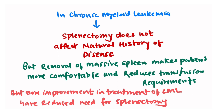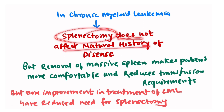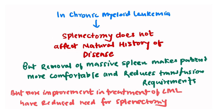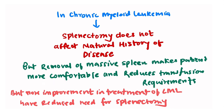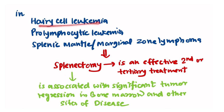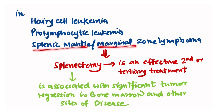In chronic myeloid leukemia, splenectomy does not affect the natural history of the disease, but removal of the massive spleen makes the patient more comfortable and reduces transfusion requirements. Improvement in CML treatment has reduced the need for splenectomy in such patients. In conditions like hairy cell leukemia, prolymphocytic leukemias, and splenic mantle or marginal zone lymphomas, splenectomy is an effective second or tertiary treatment.